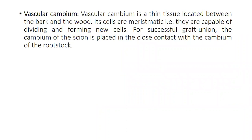The vascular cambium is the thin tissue located between the bark and wood. Its cells are meristematic — they are capable of dividing and forming new cells. In the grafting technique, both varieties' cambium tissues are necessary to unite with each other. If they do not unite, the graft cannot be successful. For a successful graft union, the cambium of the scion must be placed in close contact with the cambium of the rootstock. The vascular cambium tissue is very important for grafting.